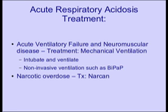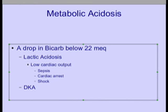Some examples of metabolic acidosis: metabolic acidosis would be a drop in bicarb below 22 and an accompanying acidosis, or low pH. Causes of this would be lactic acidosis, which happens in low cardiac output states such as sepsis, cardiac arrest, and shock, as well as diabetic ketoacidosis.